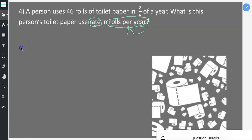So I'm going to set up my unit rate and it already says right here the order. It tells me that it's supposed to be rolls per year. So I go ahead and I put the rolls in the numerator, 46 rolls. And then the denominator is the two-fifths of a year.